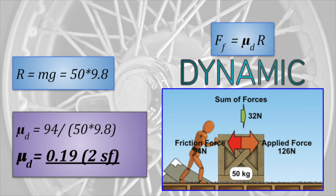This is the calculation for the coefficient of dynamic friction using the same method. As you can see, this value is less than mu for the static case.